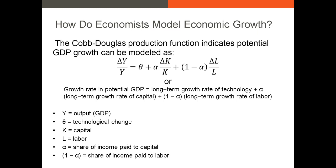Alpha and 1 minus alpha represent the share of income paid to either capital or labor in an economy, and these are sometimes just estimated. The long-term growth rate in technology is an estimate of the effect of growth in technology — in rapidly advancing economies, this value is going to be pretty high. The long-term growth rate in capital is higher when capital is flowing more rapidly into the economy, and the long-term growth rate in labor is higher when total labor hours worked is growing rapidly.